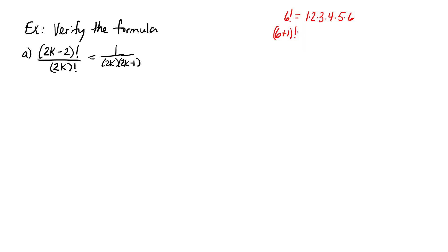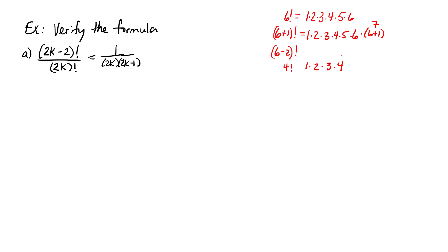If you add 1 to the 6 before taking the factorial, you just go up one more, so you'd have 1 times 2 times 3 times 4 times 5 times 6 times 7, which is 7 factorial. And if you subtract 2 from 6, that's 4 factorial: 1 times 2 times 3 times 4. Notice that the product is missing two terms — the 6 and the 5.